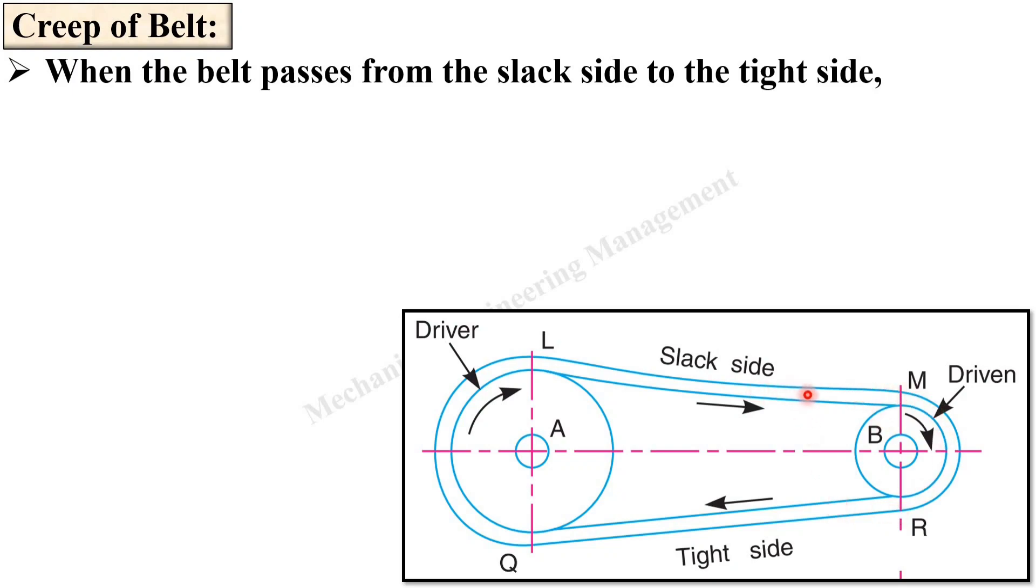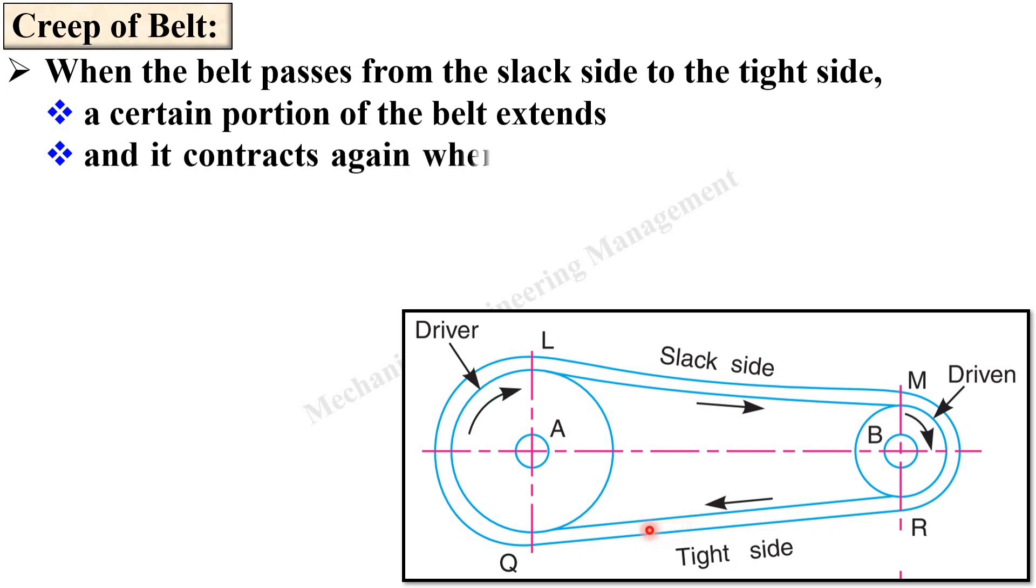When the belt passes from the slack side to the tight side, a certain portion of the belt extends because here you can see it is the tight side so it will be pulled from this side. So the length of the belt will extend and it contracts again when the belt passes from the tight side to the slack side.